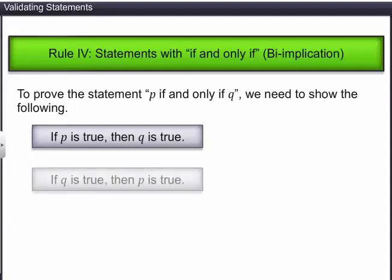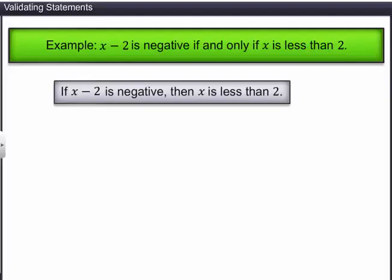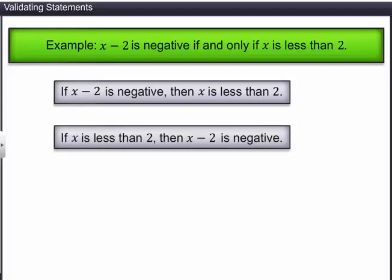Let's prove the statement: 'X minus 2 is negative if and only if X is less than 2.' This statement can be broken down as: first, if X minus 2 is negative, then X is less than 2; and second, if X is less than 2, then X minus 2 is negative. Both implications are true, therefore the biconditional is true, and the given statement is proved.